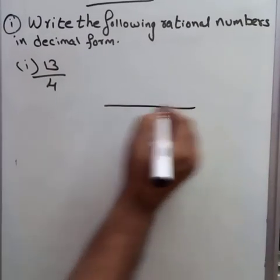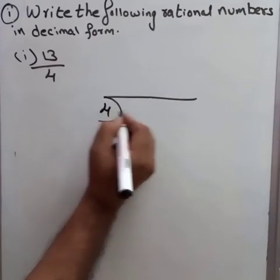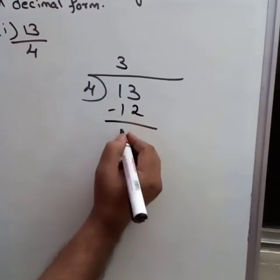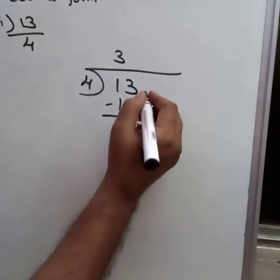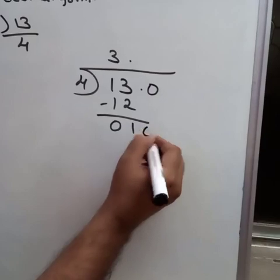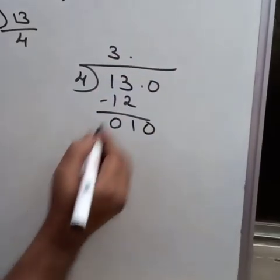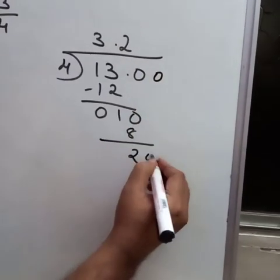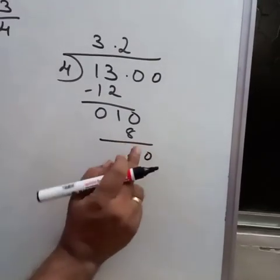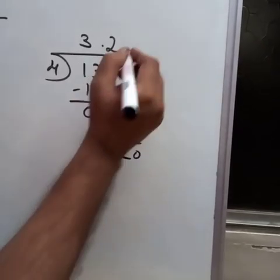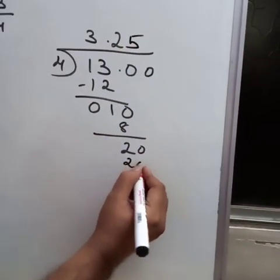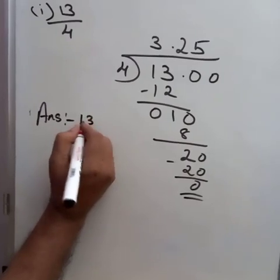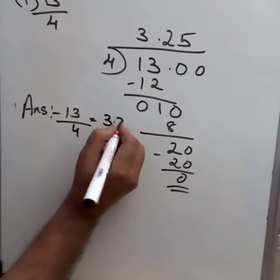The first sum is 13/4. Dividing 13 by 4: 4 goes into 13 three times giving 12, remainder 1. Bringing down a zero gives 10; 4 × 2 = 8, remainder 2. Bringing down another zero gives 20; 4 × 5 = 20, remainder 0. The answer is 13/4 = 3.25.